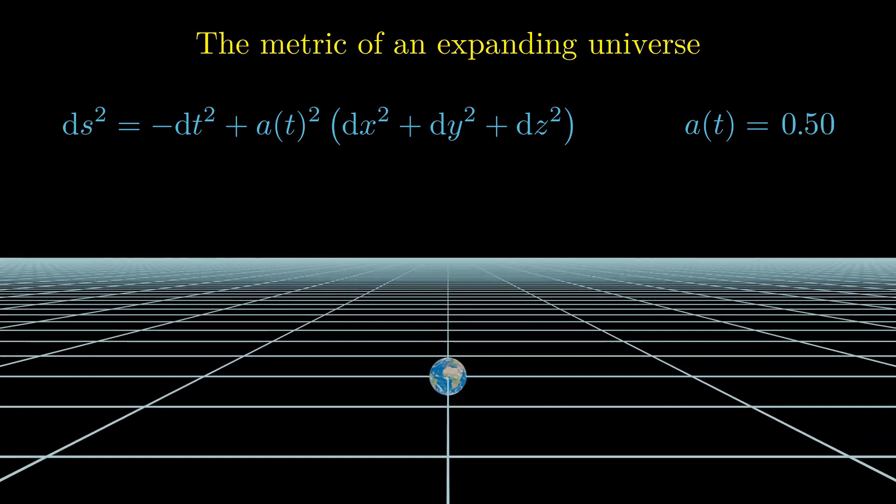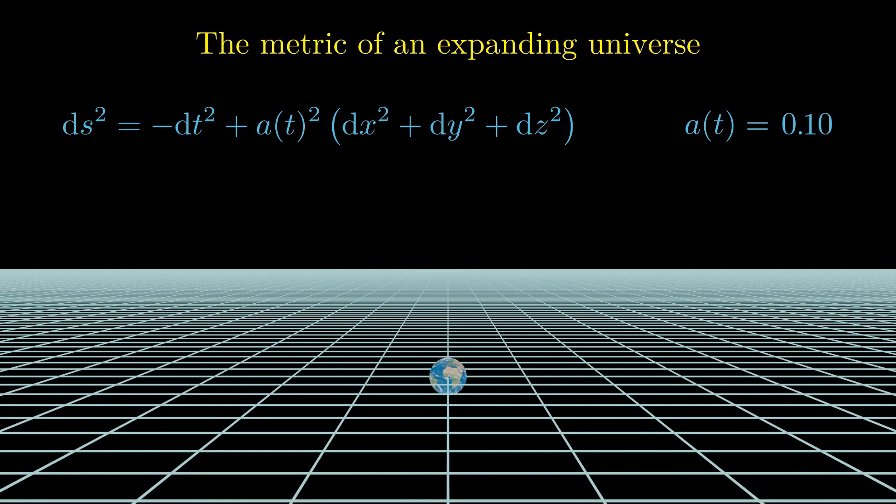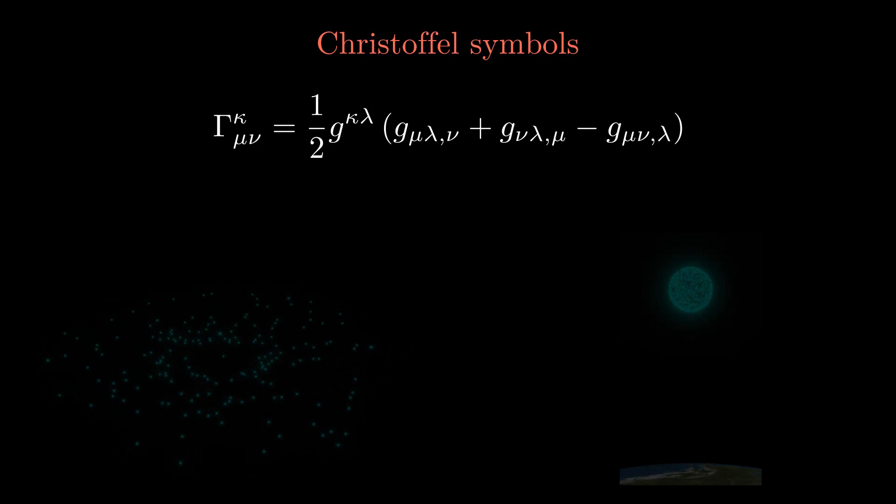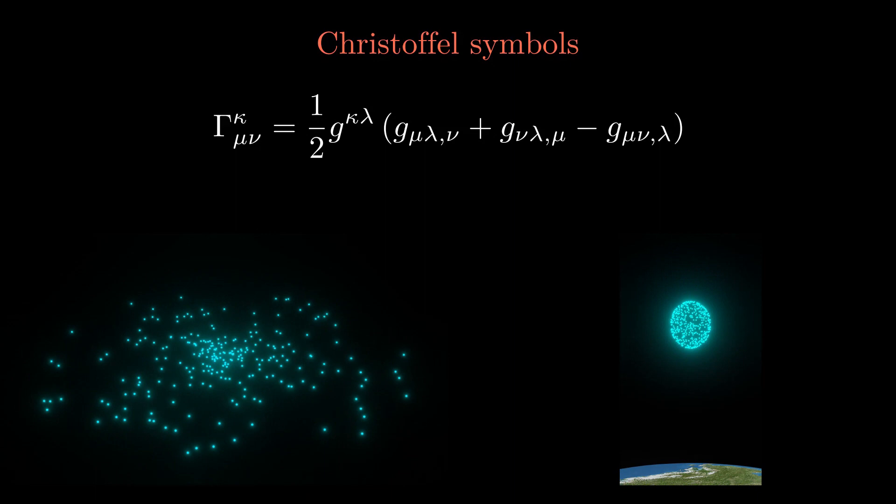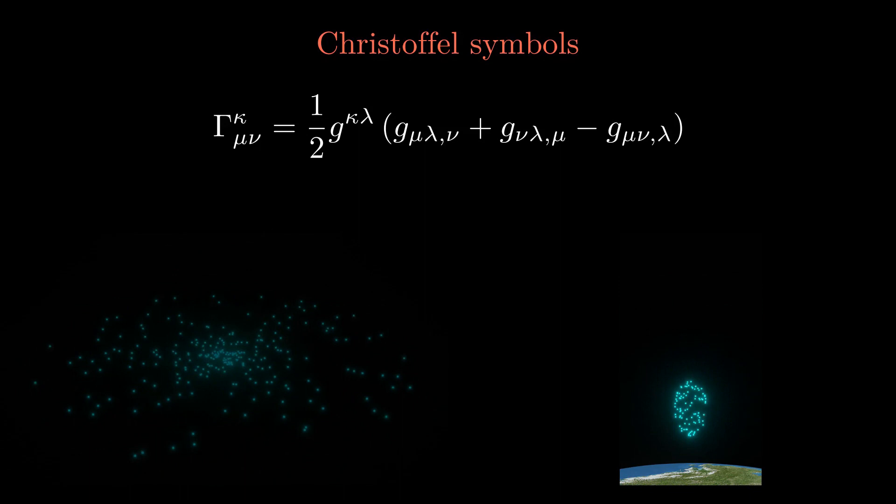From the metric, one can calculate the curvature of spacetime according to a very generic procedure. The first derivatives of the metric are combined into Christoffel symbols. They contain the information about the forces that observers feel in their locations. For instance, for a rotating observer, they contain Coriolis and centrifugal forces. In a curved spacetime, they describe gravitational and tidal forces. In the case of the expanding spacetime, the non-vanishing Christoffel symbols contain the first derivatives of the scale factor function.